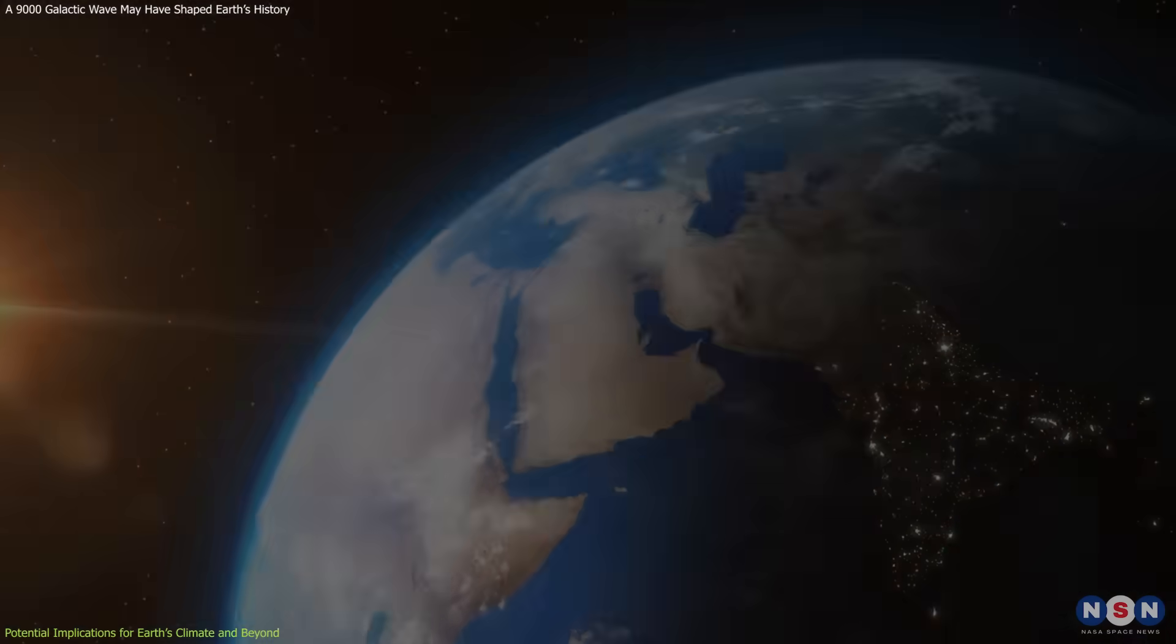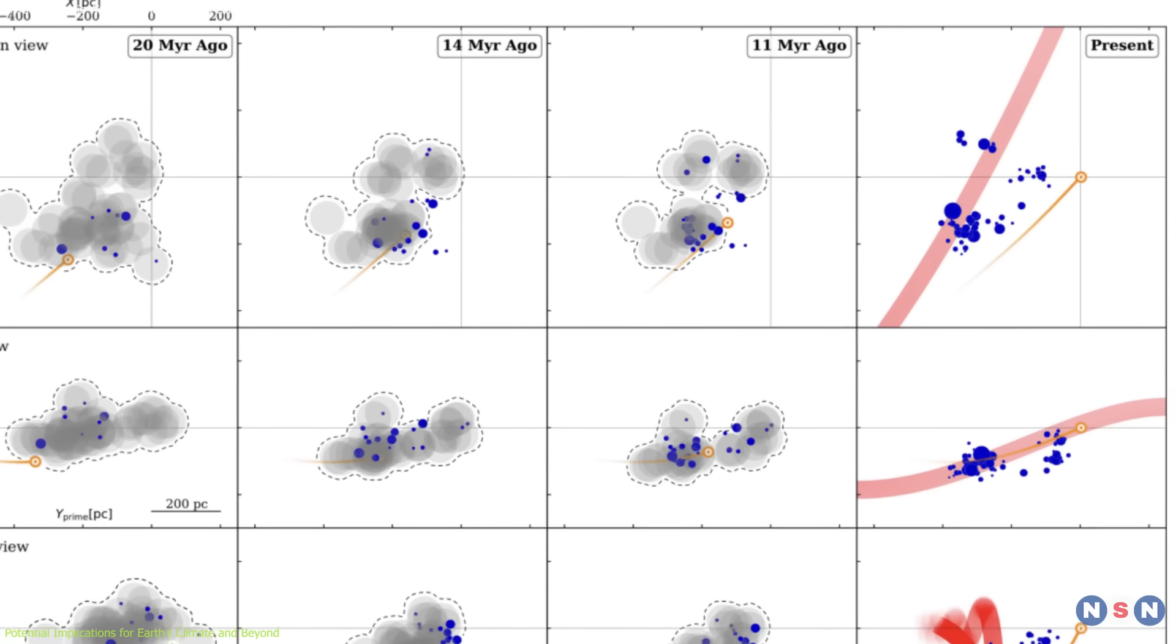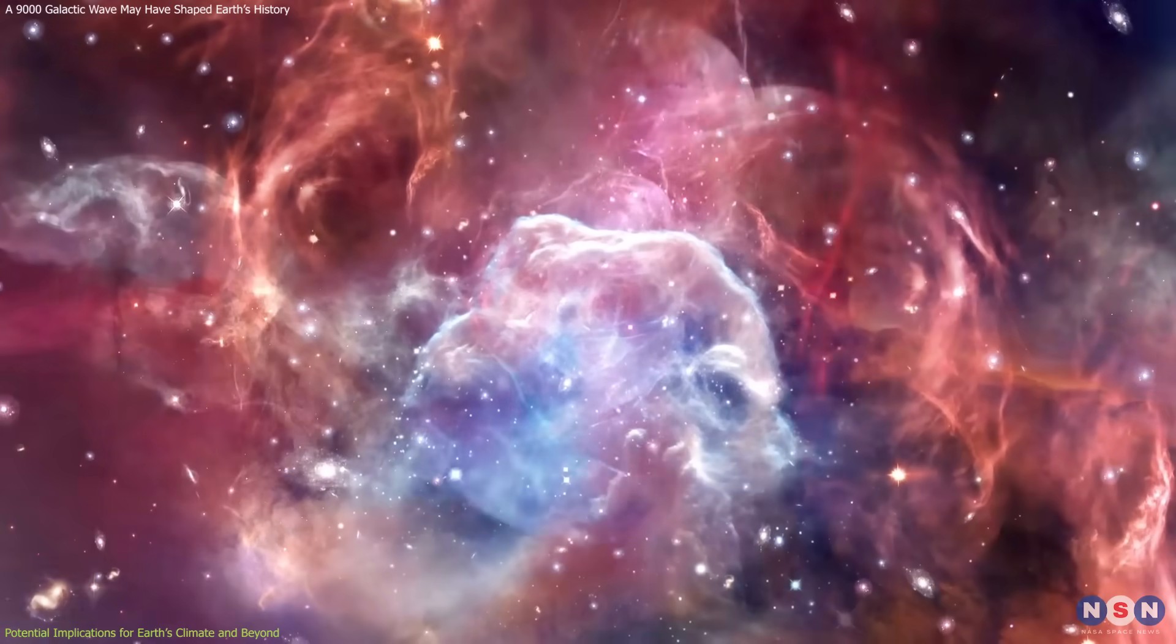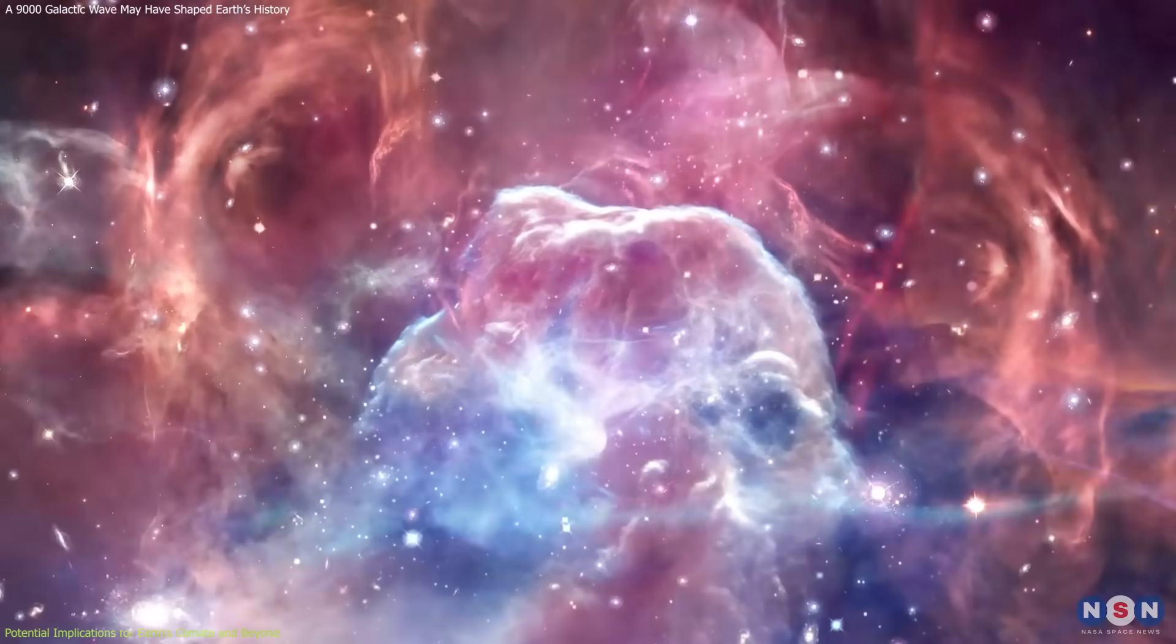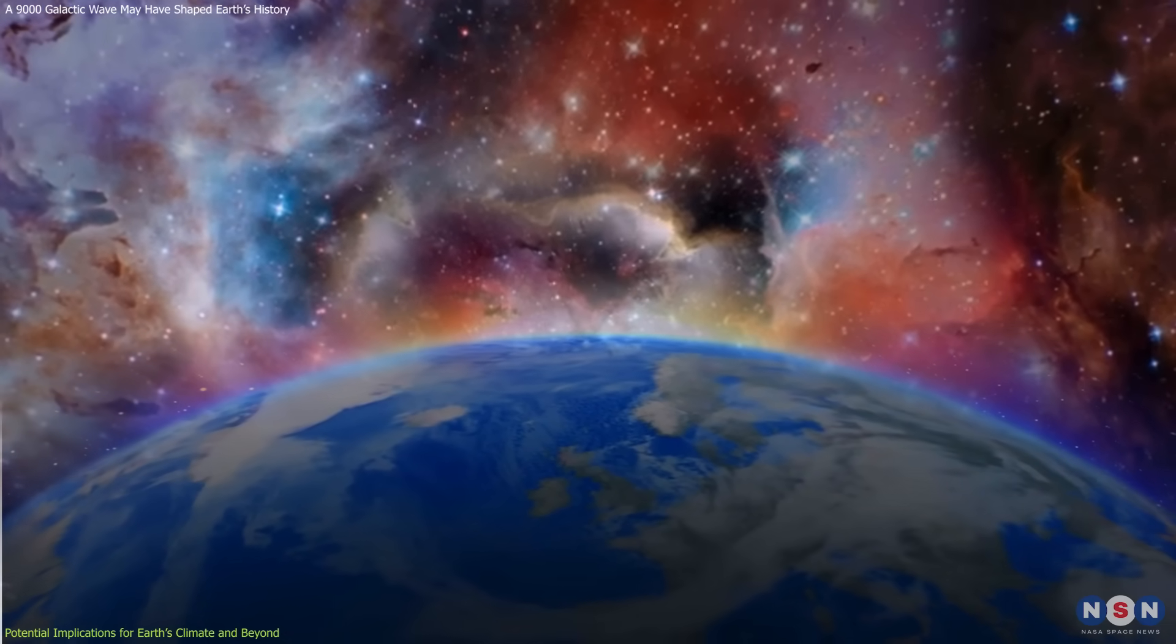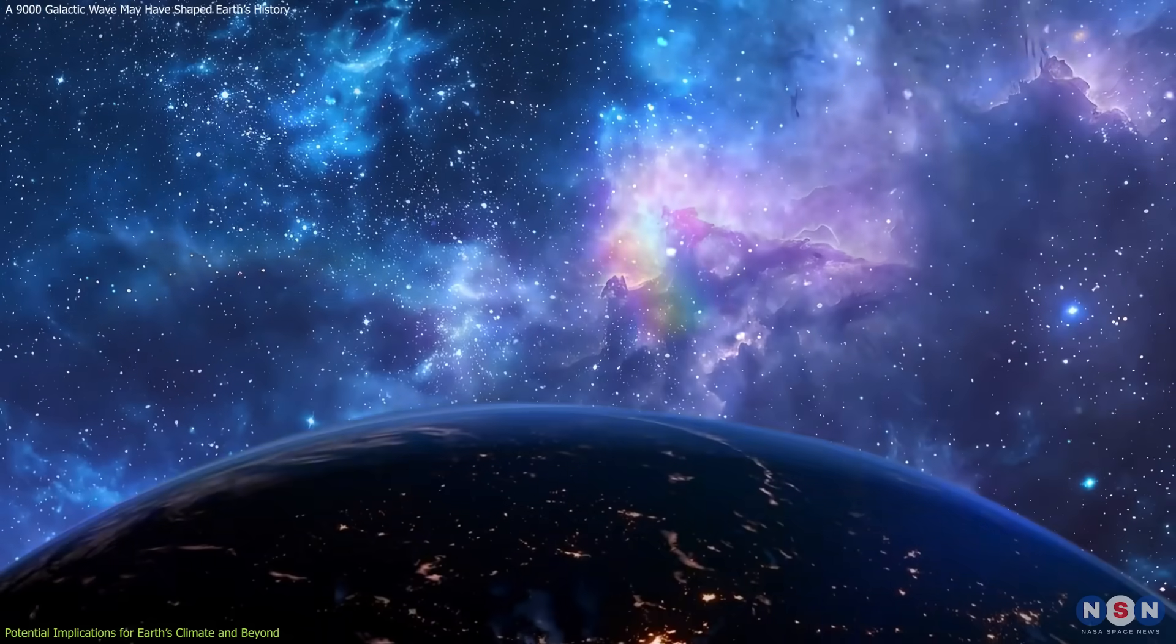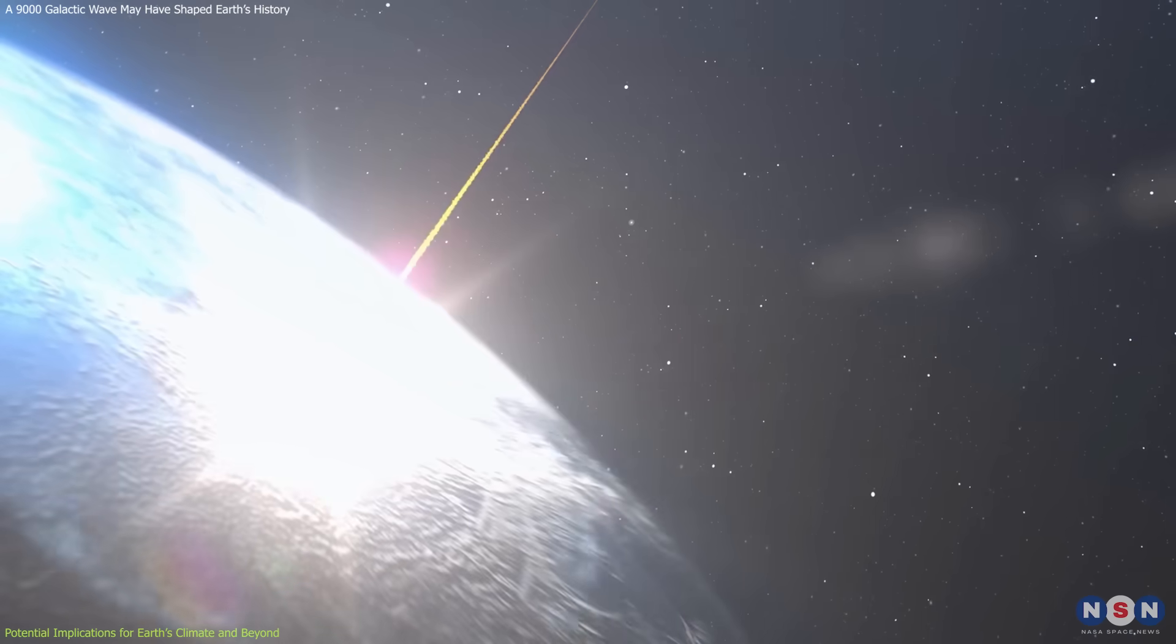Beyond Earth's climate, this discovery also has broader implications for understanding cosmic interactions with planetary systems. Interstellar dust carries essential elements, including carbon, oxygen, and other building blocks of life. The influx of such materials could have played a role in biological evolution by influencing environmental conditions or even delivering essential molecules to Earth's surface.